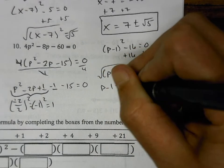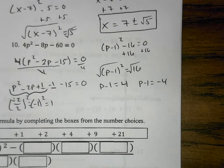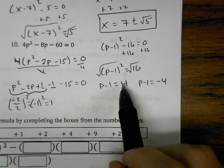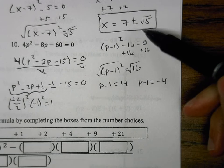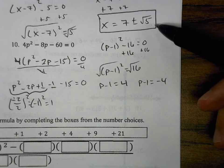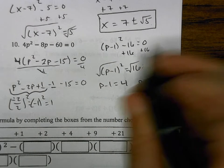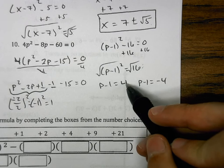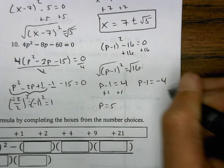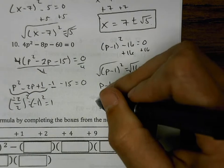Solving PEMDAS backwards: add 16 to both sides, giving (P − 1) squared equals positive 16. Square root both sides: P minus 1 equals plus or minus 4. The square root of 16 is a perfect square so we split into two answers. Add 1 to both sides: P equals 5 and P equals negative 3.